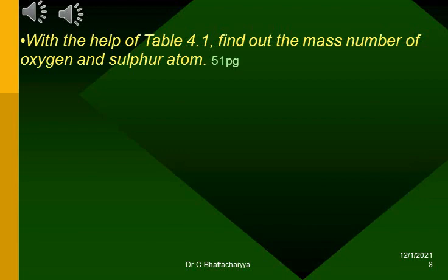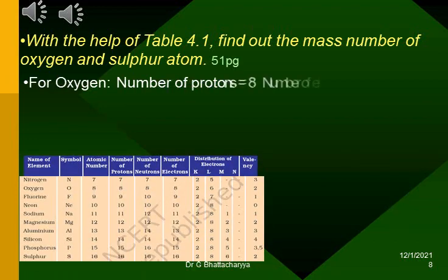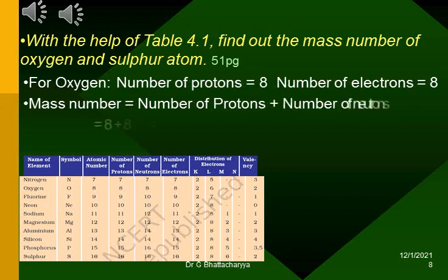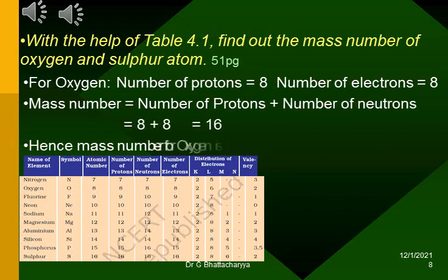With the help of table 4.1, find out the mass number of oxygen and sulfur atom. For oxygen, number of protons equals 8, number of electrons equals 8, mass number equals number of protons plus number of neutrons equals 8 plus 8 equals 16, hence mass number for oxygen is 16.